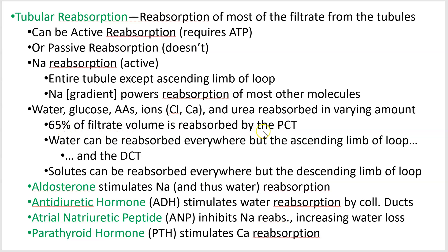Most of this reabsorption takes place in the proximal convoluted tubule, so you get most of it back pretty quick. Water comes back everywhere except the ascending limb. Water can be reabsorbed everywhere except for the ascending limb and the distal convoluted tubule.